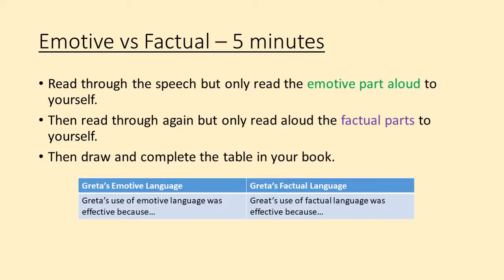Okay, what I'd like you to do now is read through the speech but only read the emotive part aloud to yourself. Then read through it again but only read the factual part to yourself. Then I would like you to draw and complete the table in your book: 'Greta's use of emotive language was effective because...' and 'Greta's use of factual language was effective because...' Please pause the video for 5 minutes to do that now.